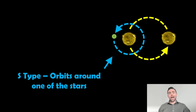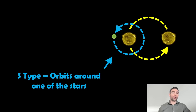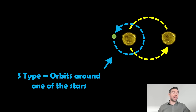Then we have an S-type orbit. With the same two binary stars, the planet is actually orbiting just one of those stars, and then that star is orbiting the common centre of mass with the other star. So two very different orbits: one goes around the outside, one just goes around one of the stars, which then goes around the other star. S and P-type are the two types of orbits in a binary star system with a planet.